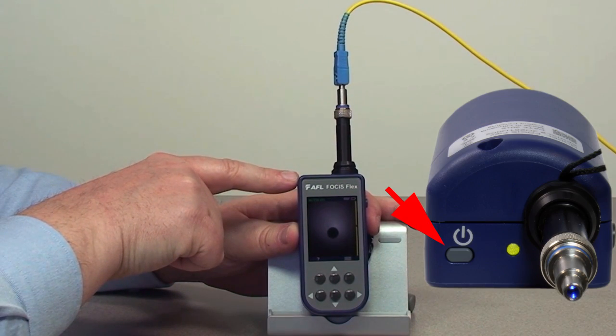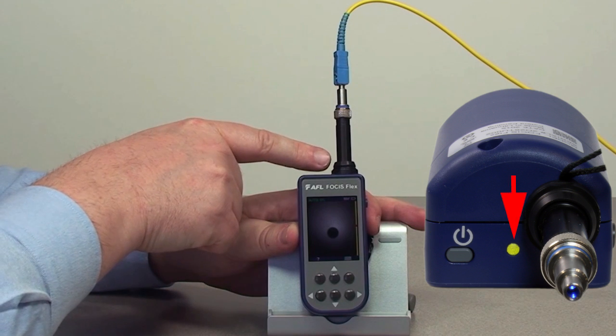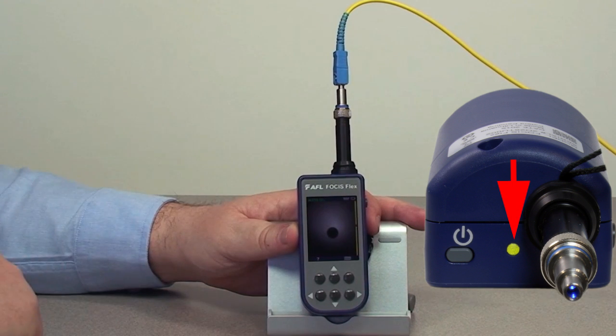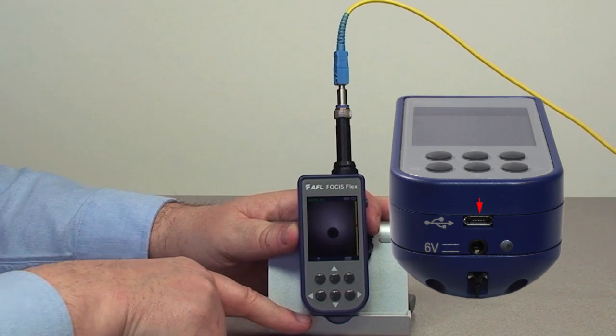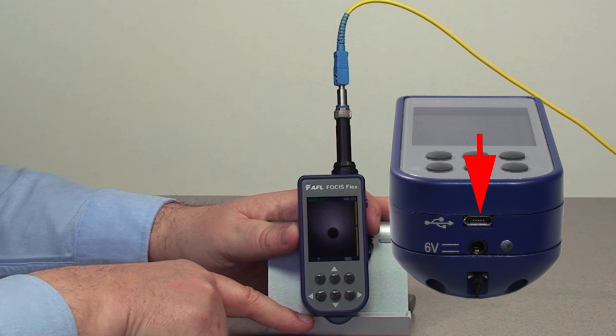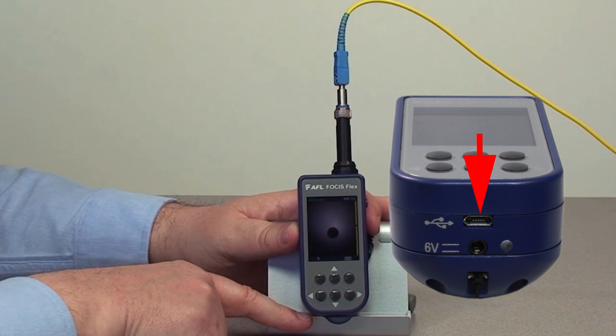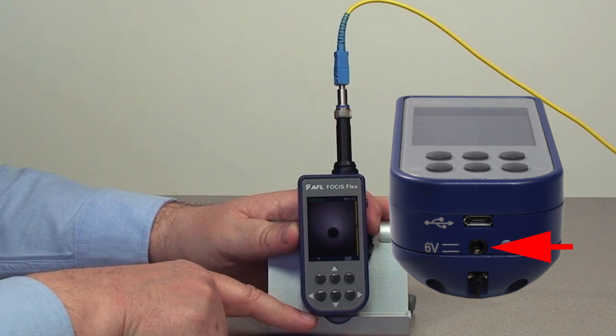There is a power button that would turn on the unit as well as a LED indicating the unit is powered on. On the bottom there is a USB port that allows you to plug this into your PC and offload any of the 10,000 images you are able to store, as well as a power port.